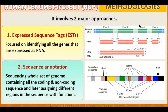It took two major approaches to gather gene information. The first one was Expressed Sequence Tags — ESTs — which focus on identifying all the genes that are expressed as RNAs in the translation and gene expression process. The second was sequence annotation: sequencing the whole set of genomes containing all the coding and non-coding functioning.